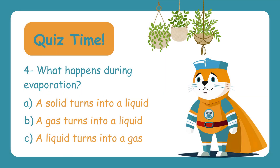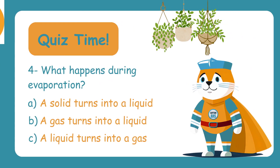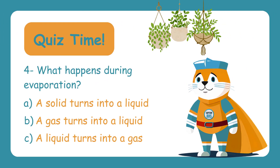What happens during evaporation? A, a solid turns into a liquid! B, a gas turns into a liquid! C, a liquid turns into a gas! The correct answer is C — a liquid turns into a gas! This happens when water gains energy and escapes into the air.